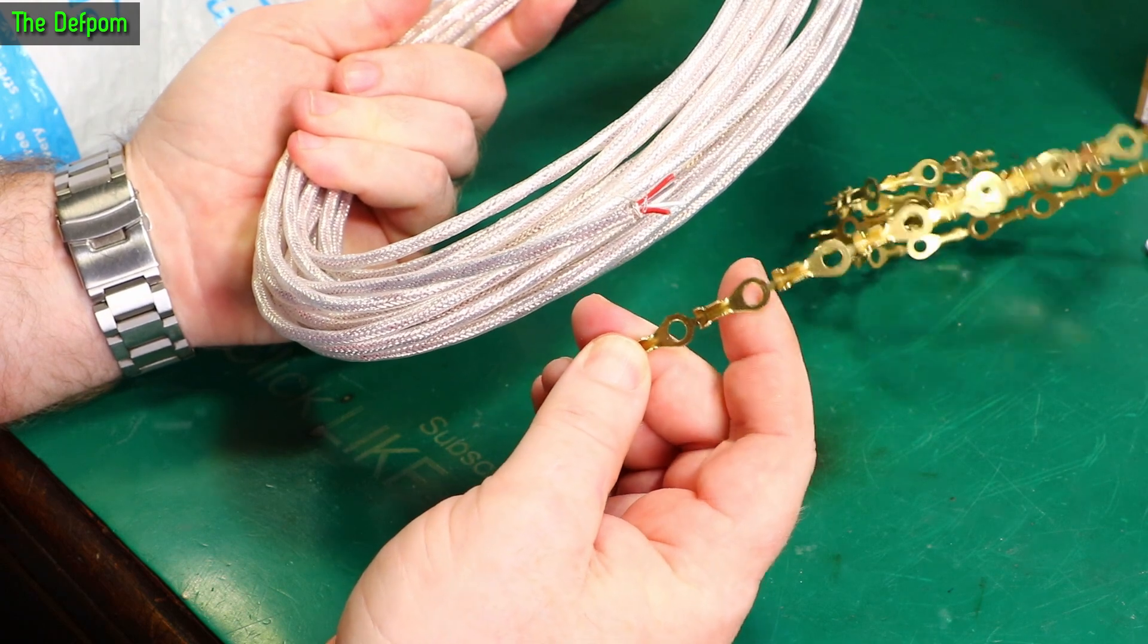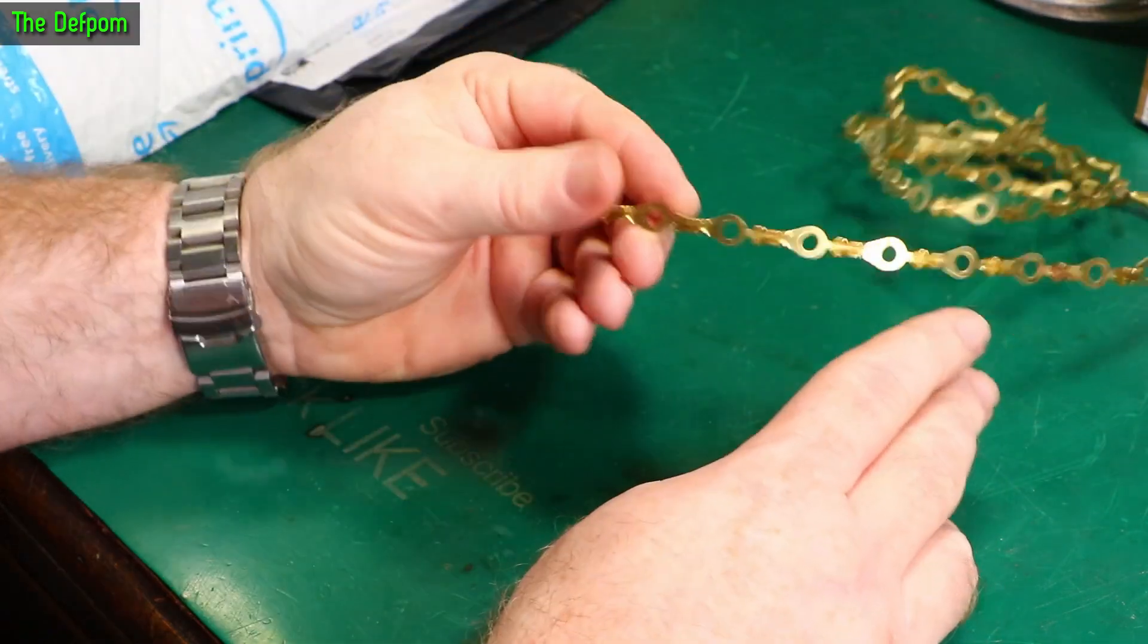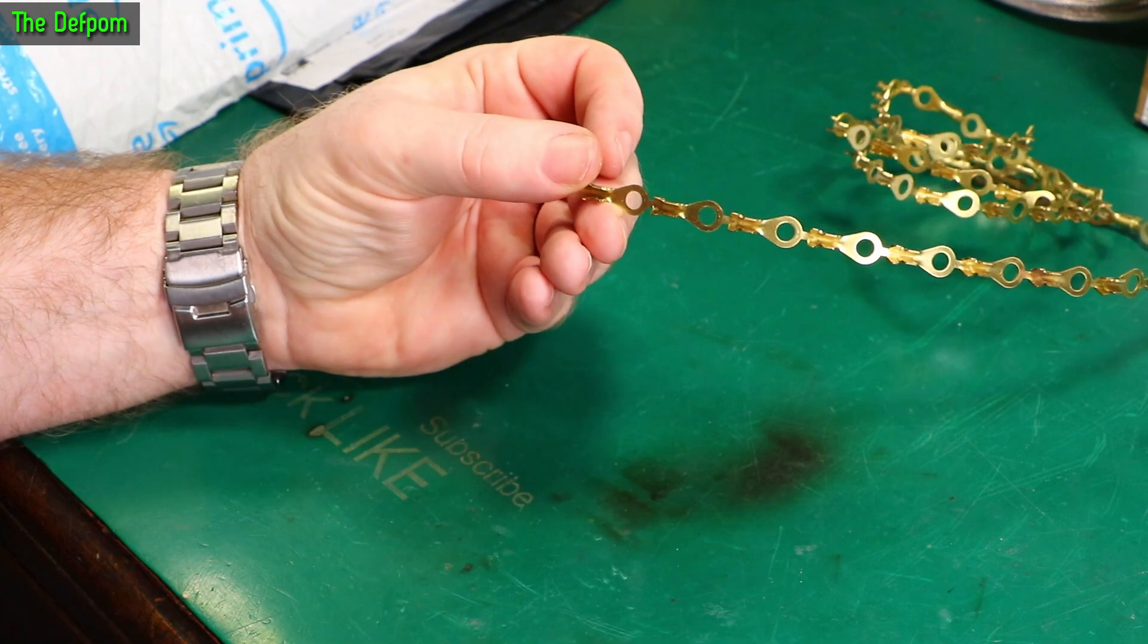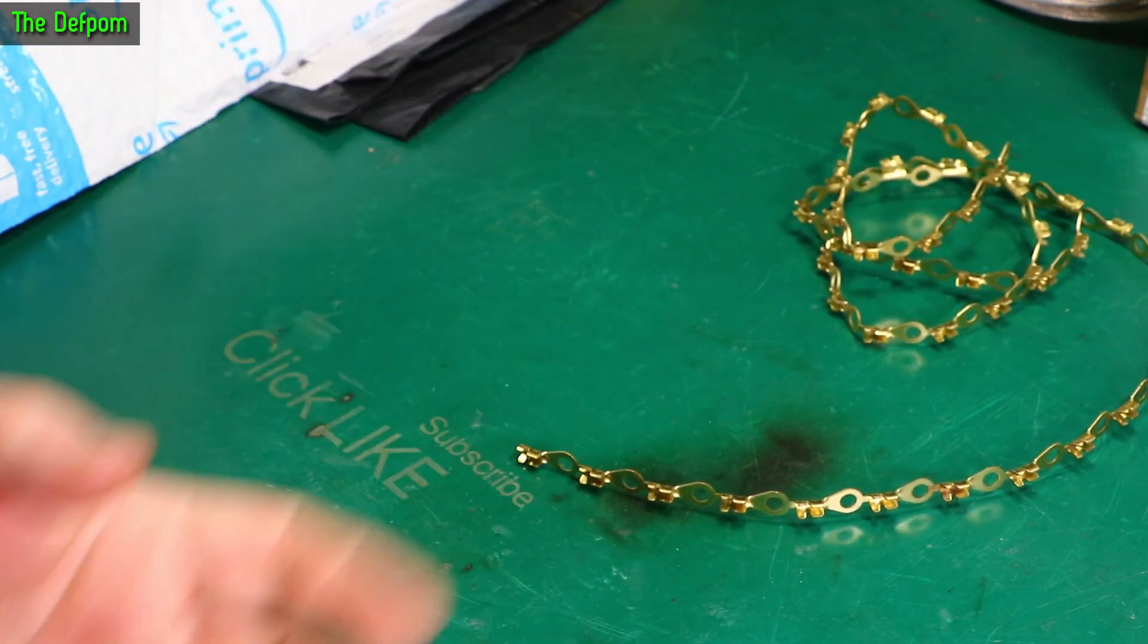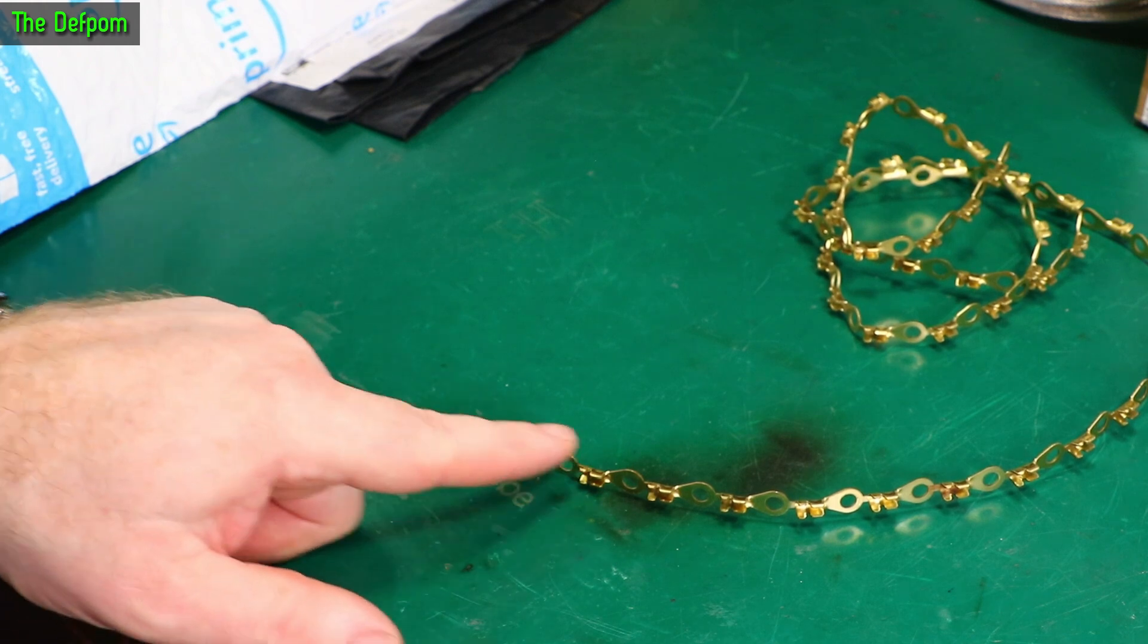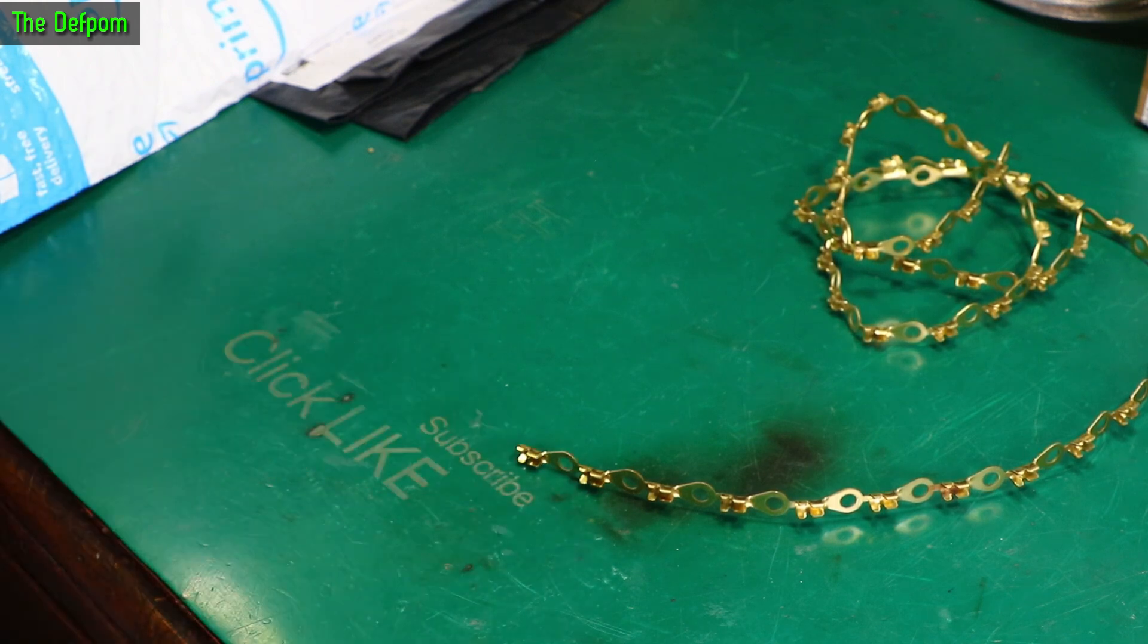They're probably not the best thing, because really I need fork terminals, not ring terminals. Because you can't always put ring terminals on. Anyway. I've got some now. I might have to cut the end off or something to make them a fork terminal. Yeah.